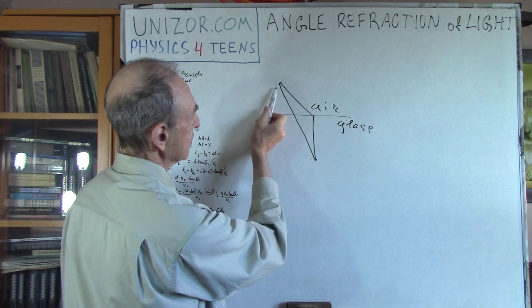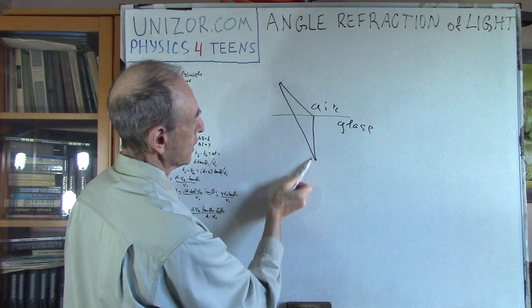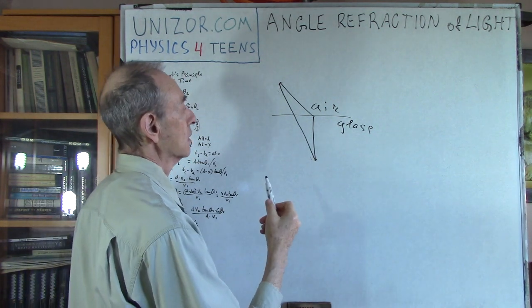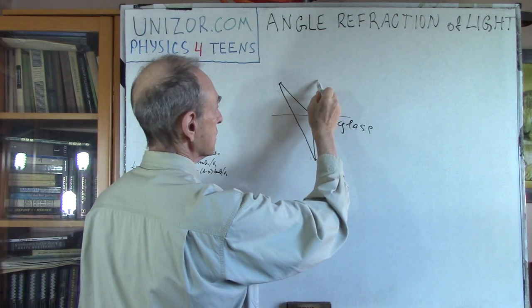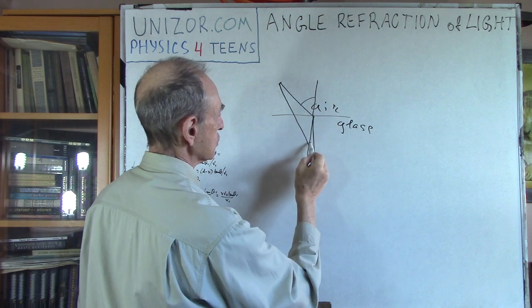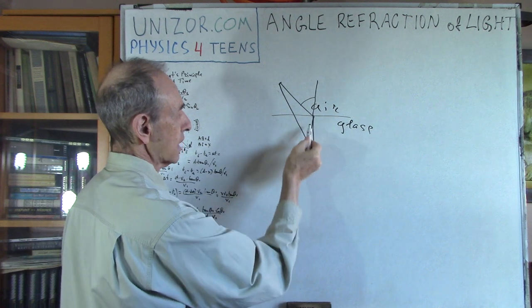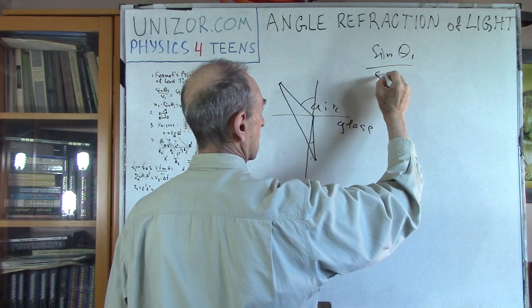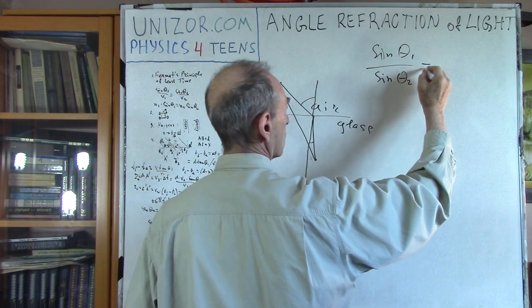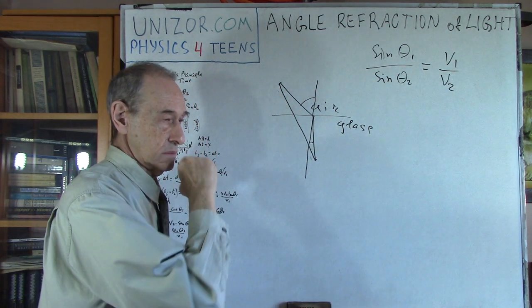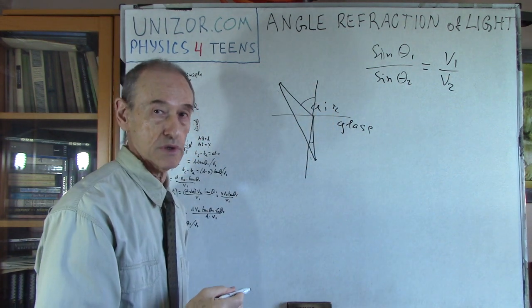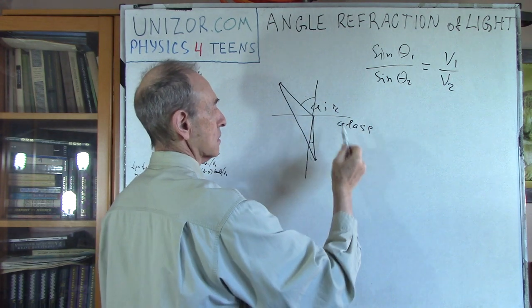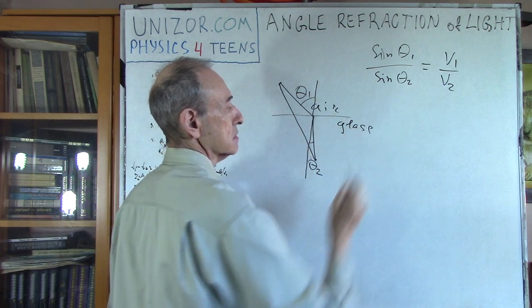Look at what happens in this particular case: we are spending less time in the air but greater time in the glass when we go straight. And apparently, if you do the calculations which we did in that particular lecture, you will find out that there is a connection between these two angles — the angle of incidence and angle of refraction — and the relationship is that their sines are related as the speeds of light in the corresponding substances. This angle is greater than this one because the speed in air is greater than in glass.